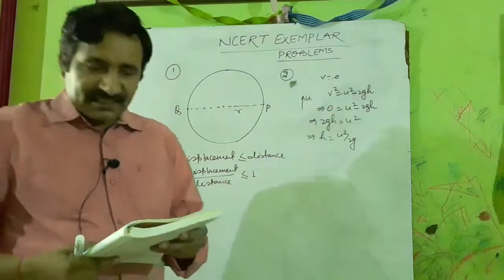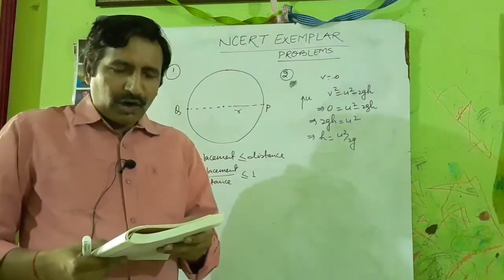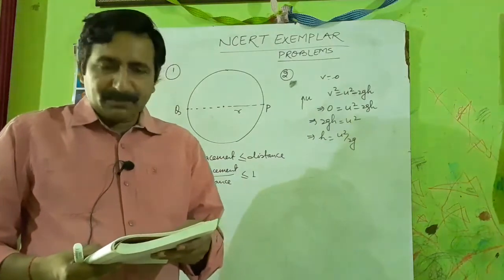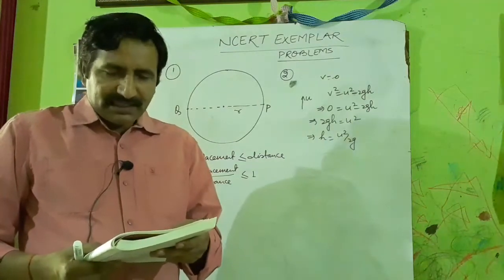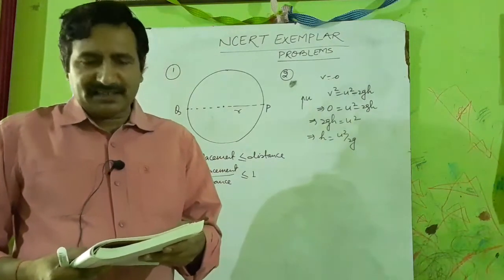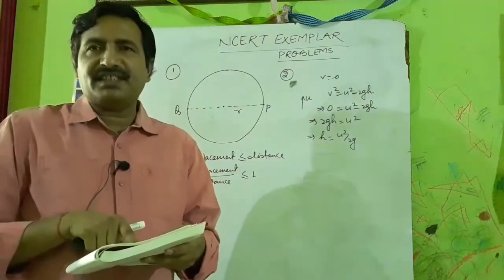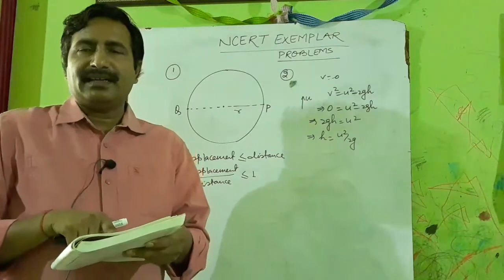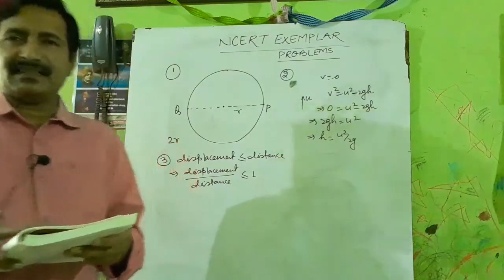The options are: always less than 1, always equal to 1, always more than 1, or equal to or less than 1. The correct answer is D — equal to or less than 1.